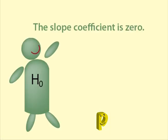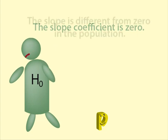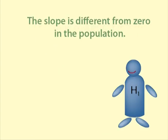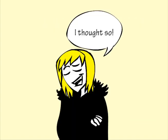The null hypothesis is that the slope coefficient is 0. P is low, null must go — so we reject the null hypothesis. We do have evidence that the slope is different from 0 in the population. We can tell Helen that this supports her theory that she sells more packets on cold days.